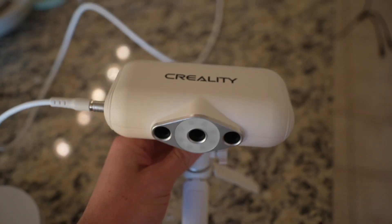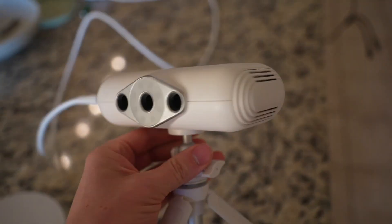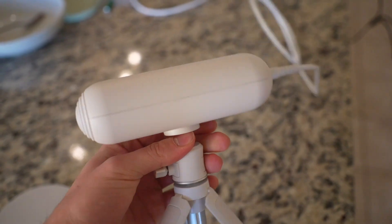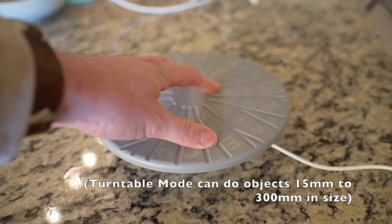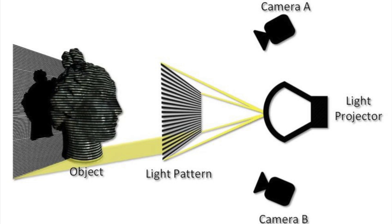So here's the thing set up on its tripod. You can use it in a handheld mode as well that lets you scan bigger objects, but to eliminate the human error because I'm new to this, I'm going to be using the turntable mode.